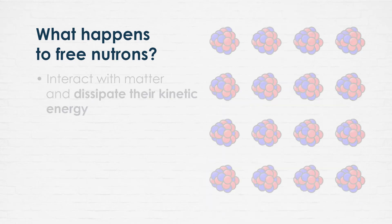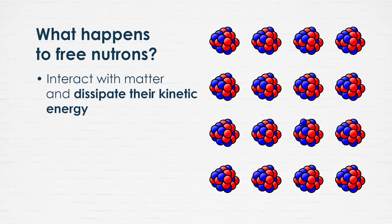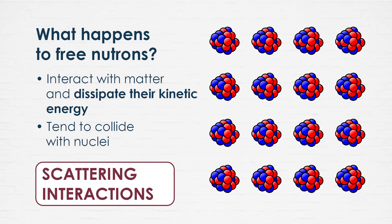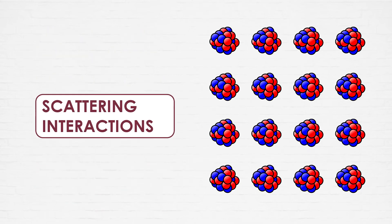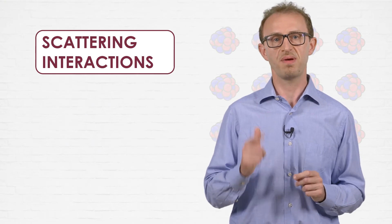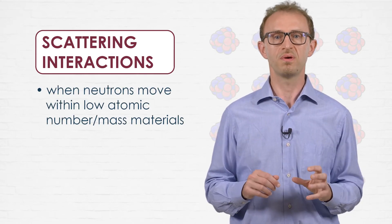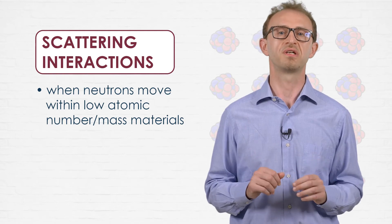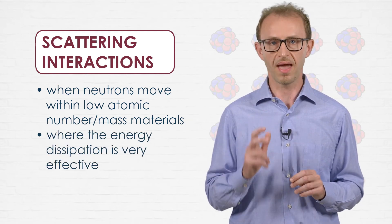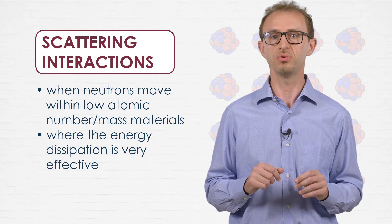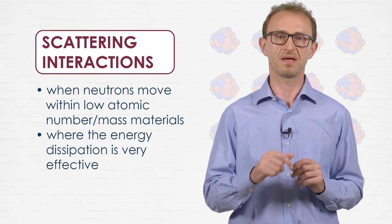Well, they start interacting with matter via different nuclear reactions, dissipating their kinetic energy. Being neutral particles, neutrons tend to collide with nuclei by undergoing the so-called scattering interactions. This is especially true when neutrons move within low atomic number materials, where the energy dissipation due to collisions results to be very effective.